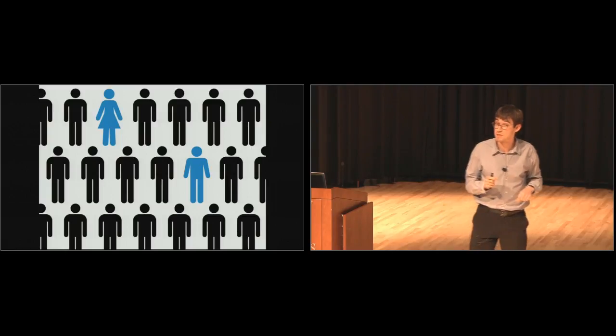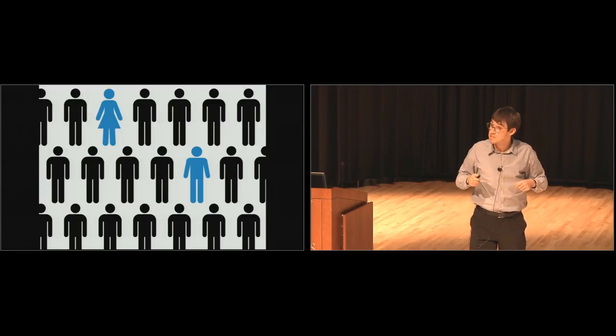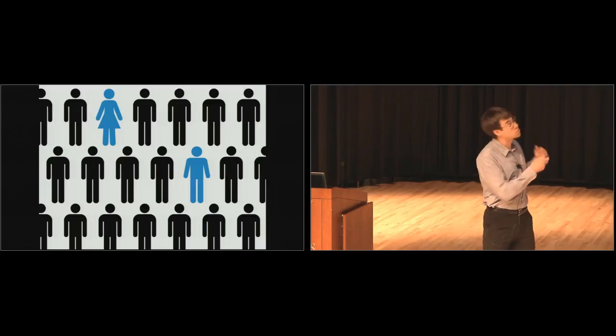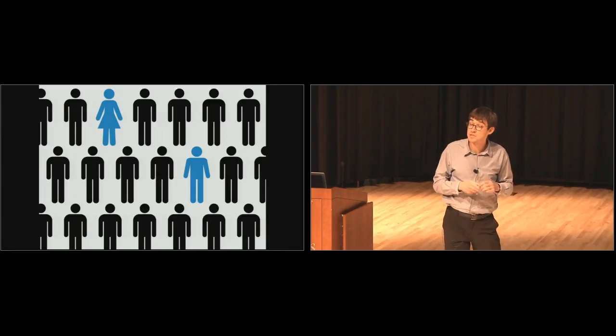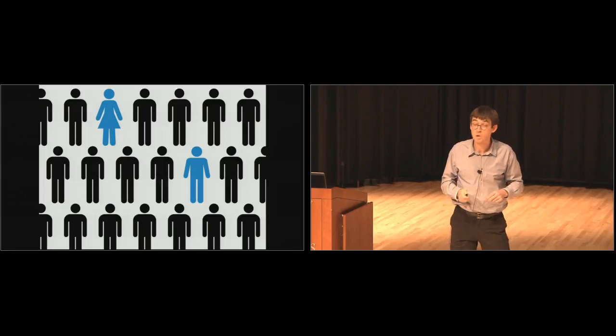Now, when these chemicals are released into the environment, somehow the lady in blue has to detect them — she has to know that they're there. And how does she do this? We found that she uses something called a neuropilin, which is the detector molecule.